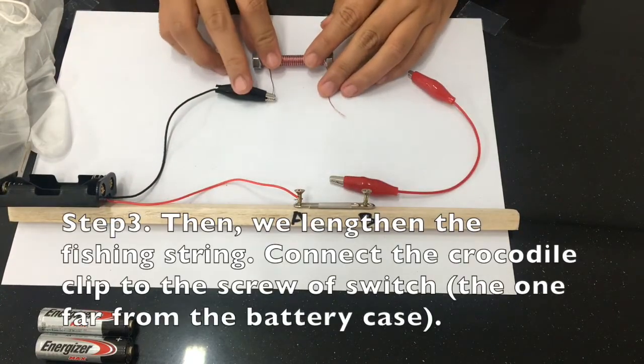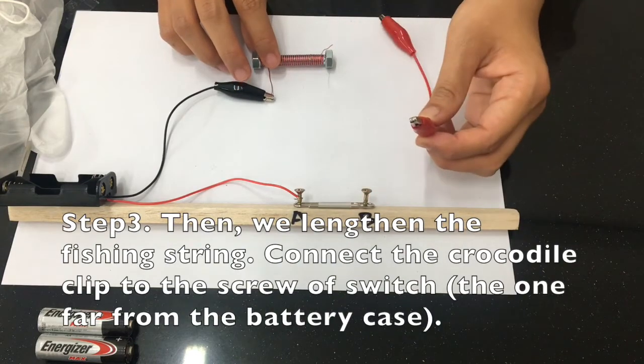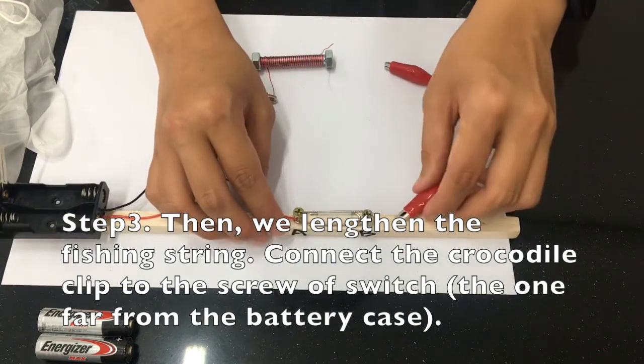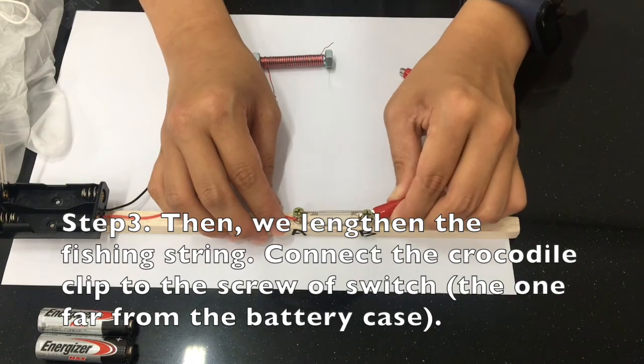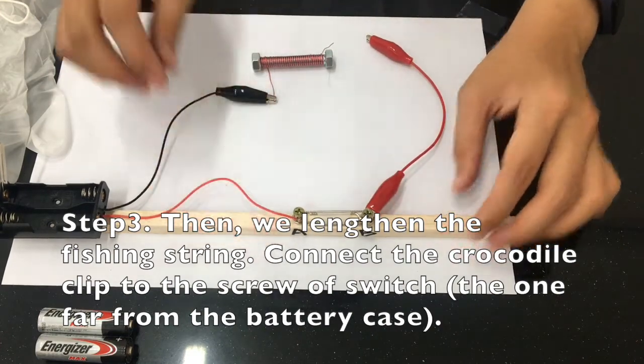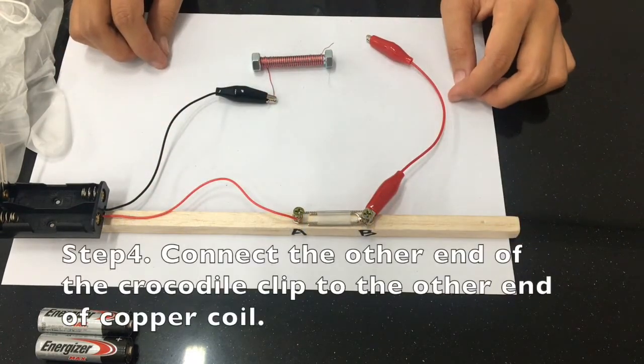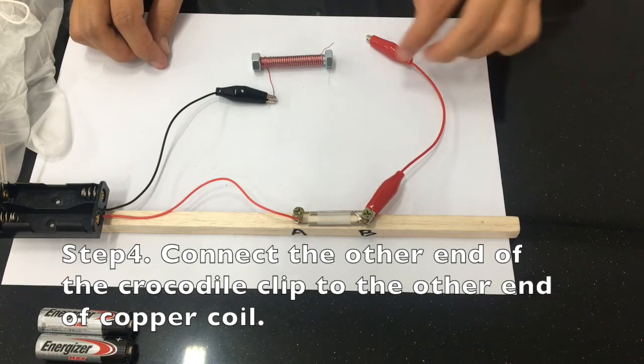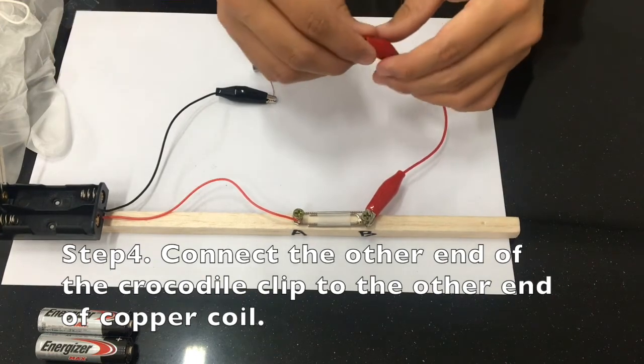Step 3: Then we lengthen the fishing stream. Connect the crocodile clip to the screw of the switch, the one far away from the battery case. Step 4: Connect the other end of the crocodile clip to the other end of the copper coil.